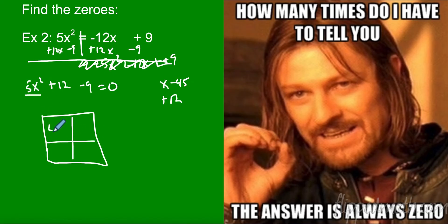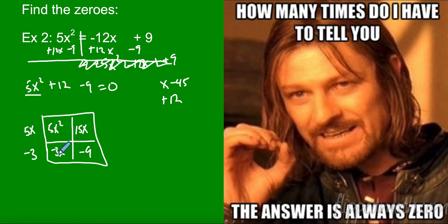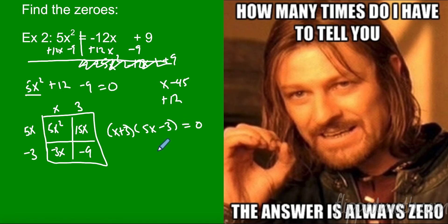First term goes in the first box: 5x². Last term in the last box. 15 times negative 3 multiplies to negative 45 and adds to positive 12. Going this way I take out a negative 3 — it's negative because the closest box is negative. Between 5x² and 15x I take a 5x out going up. I can take an x out here and a 3 out there. So I've changed my original to (x + 3)(5x − 3) = 0.